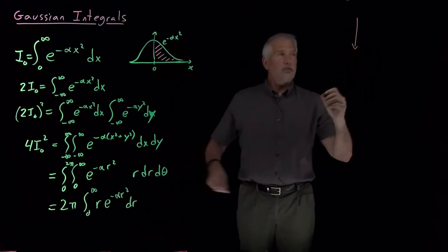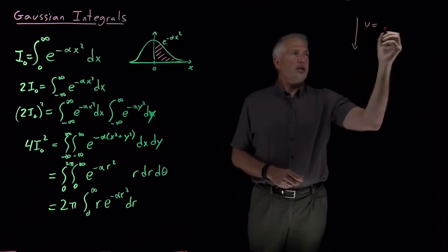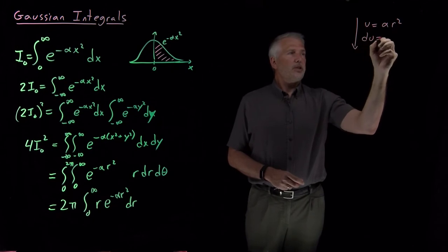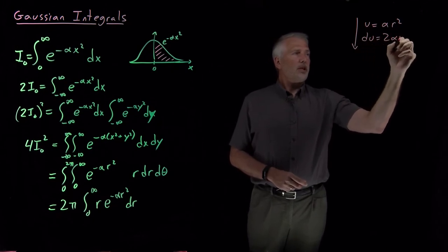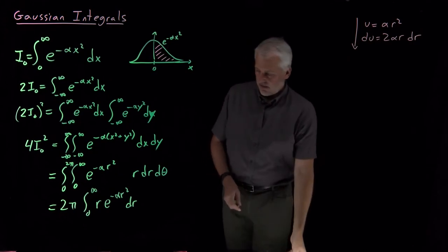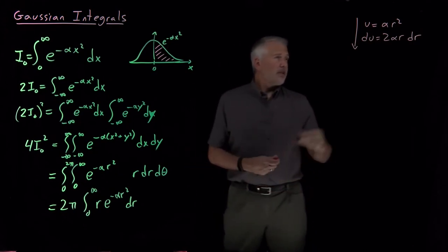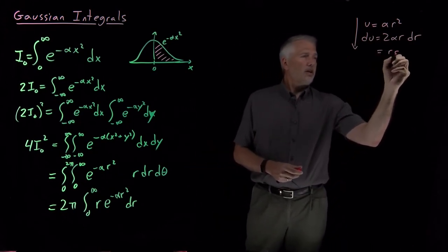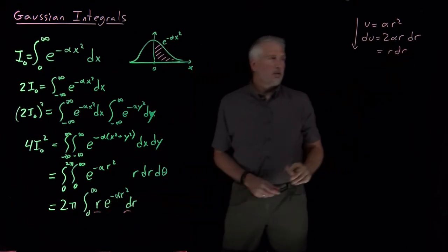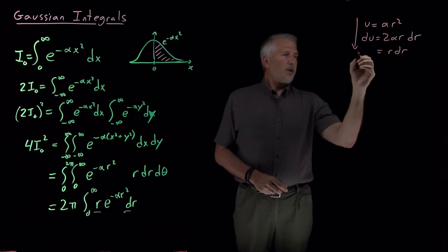Continuing from this result, if I say let's let u be maybe alpha r squared so that du is equal to twice alpha r dr, then let me go ahead and say the r dr that I have in the integral, if I bring the 2 alpha over the other side, that'll be 1 over 2 alpha times du.